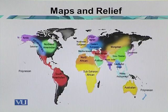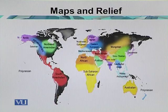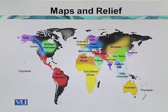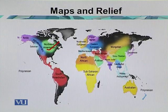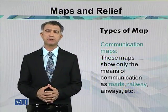This map shows the different cultures of the world. The northern part of Africa is covered with North African culture. Central and south Africa is covered with sub-Saharan African culture. The western side of Europe is covered with Northwest European culture, and the central part of North America is covered with North American culture. These represent different tribes or small races of the world, and these maps are important to show the social groups of the world.